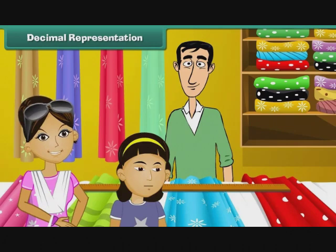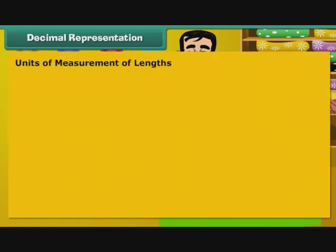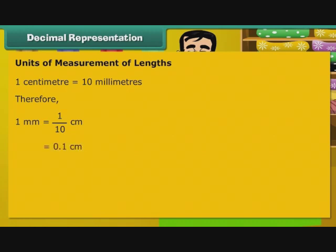Bela accompanies her mother to a saree shop. She asks the shopkeeper the actual length of a saree. The shopkeeper measures it in front of her as 550 cm. Bela wants to know if 550 cm can be expressed as metres. To answer Bela's question, let us understand the relationship between the different measures of length. 1 cm is equal to 10 mm. Therefore, 1 mm is equal to 1 by 10 cm, that is equal to 0.1 cm.